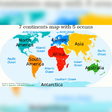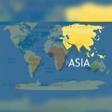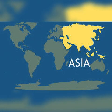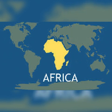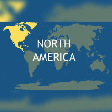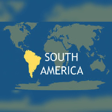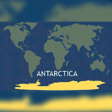There are seven continents in the world. So let's see what are they: the continent of Asia, continent of Africa, continent of North America, continent of South America, continent of Antarctica, continent of Europe, and continent of Australia.